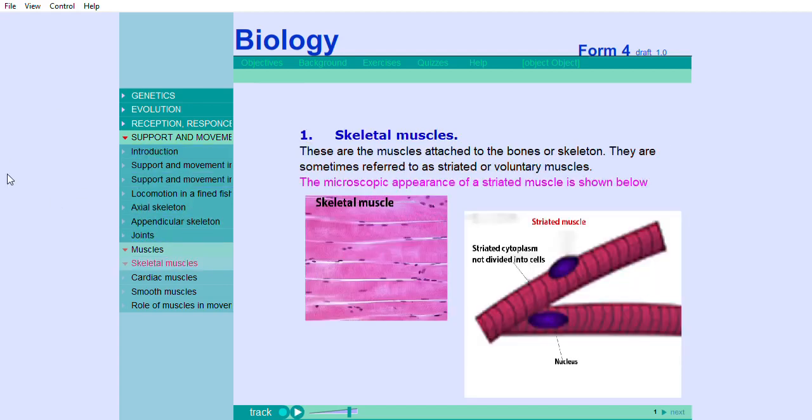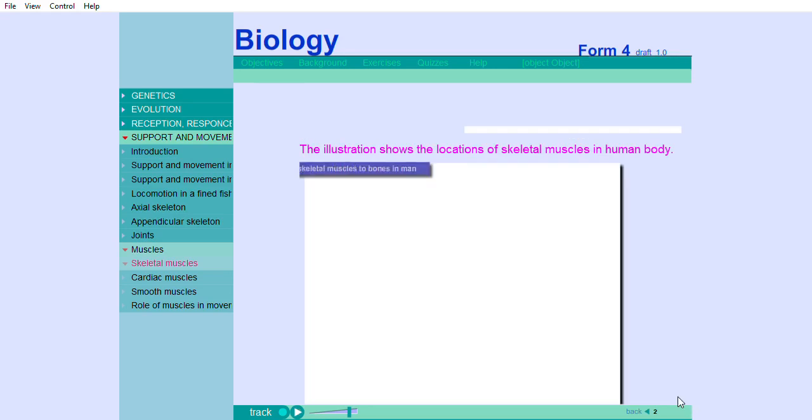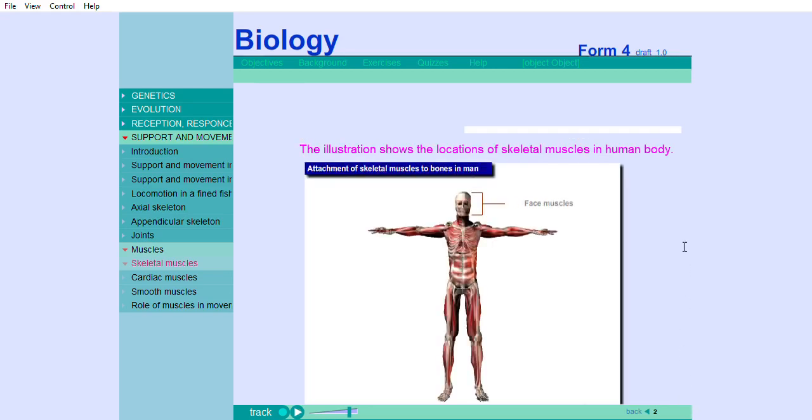Skeletal muscles are the muscles attached to the bones or skeleton. They are sometimes referred to as striated or voluntary muscles. The microscopic appearance of a striated muscle is shown below. The illustration shows the locations of skeletal muscles in the human body.